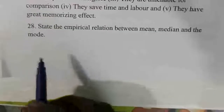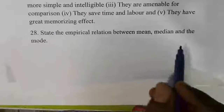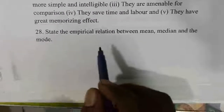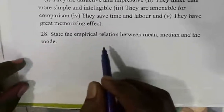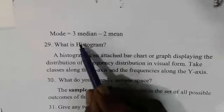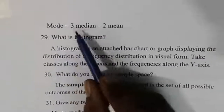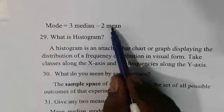28th question: the empirical relation between mean, median, and mode. The formula is: Mode equals 3 Median minus 2 Mean. This is used in problems where, given two of the three values, you substitute to find the third.